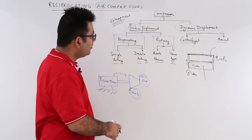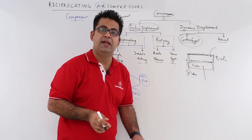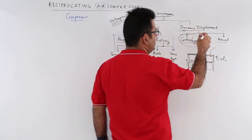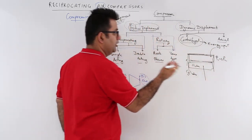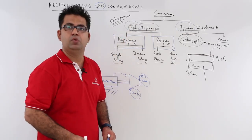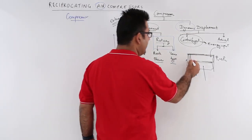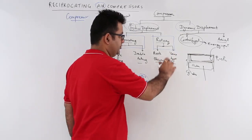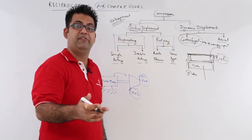But if you talk about dynamic displacement — for example, centrifugal — the entrapment of the fluid is not there. The pressure increase is majorly due to energy input. You provide energy to the moving air and it goes out at a higher pressure. Because in positive displacement you are entrapping the fluid inside a volume and pushing it against a fixed surface — the cylinder head — the pressure increase from P1 to P2 is very, very high.